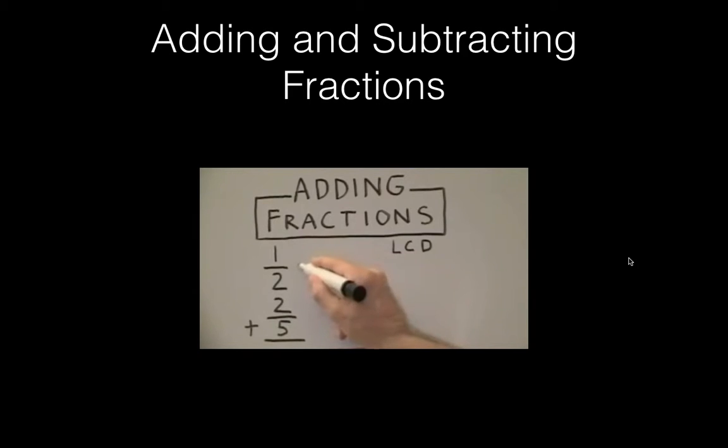Once we have our LCD, we can go ahead and make it the denominator for both fractions. Next, we take the 10, divide it by the 2 to get 5. Take that 5, multiply it by 1 to get 5. And that will become our numerator for the top fraction.